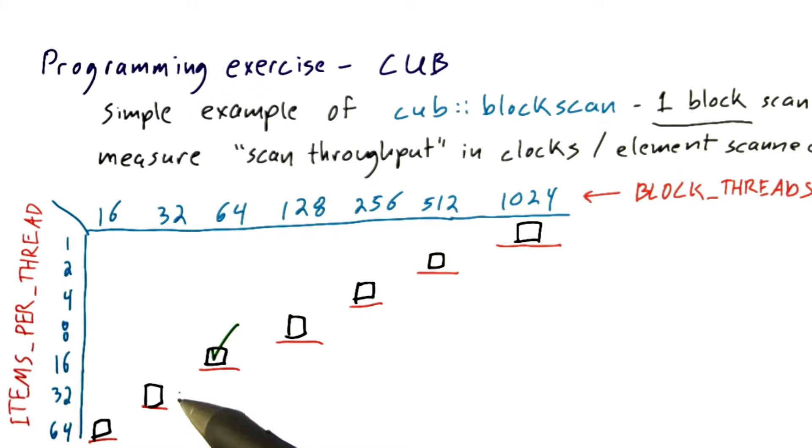And then it starts to go up again. And in my measurements on Fermi, which is the same GPU that you'll be using on the Udacity IDE, I get 32 by 32 being slightly slower than 64 threads with 16 items each. And at some point,